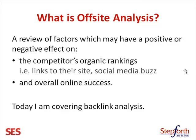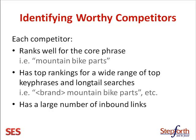That is all of the links pointing to a given competitor and how they may be helping them with rankings. To do this we need to identify some worthy competitors. Each competitor has to rank well for the core phrase — in this case let's say mountain bike parts. We want to find three competitors, and make sure those three competitors aren't just one-hit wonders. We want to make sure they've got a wide range of top key phrase rankings and long tail rankings. We also want to be sure that they have a large number of incoming links or backlinks, because we want to get a lot of data to assist you with your link building at the end of this project.